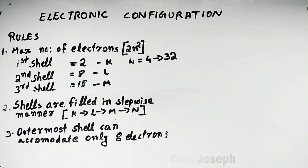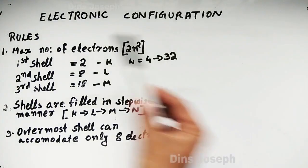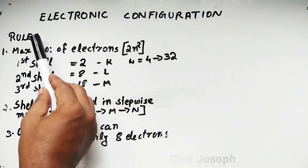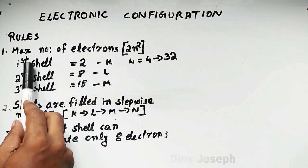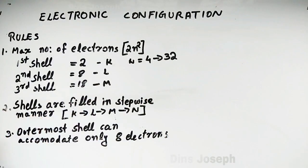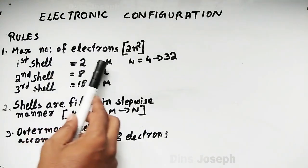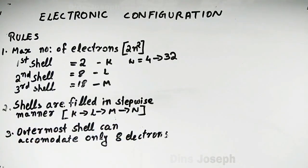The distribution of electrons in shells according to their energy is called electronic configuration. You can arrange electrons in different shells. The rules are: first, the maximum number of electrons in any shell is 2n². K holds 2, L holds 8, M holds 18, N holds 32.